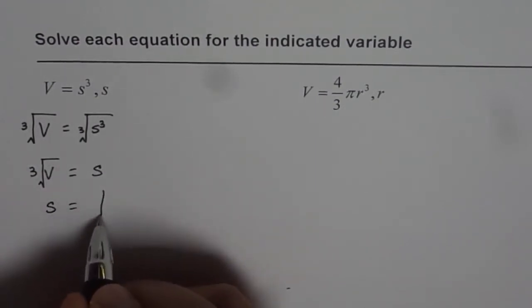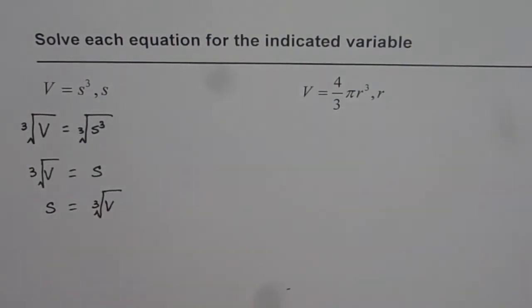So side is cube root of volume. If we have a cube with a volume of 1000 cubic centimeters, then each side will be the cube root of 1000, which is 10 centimeters. That is how you can apply the formula and solve a question.